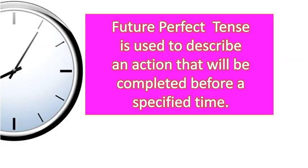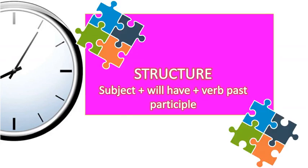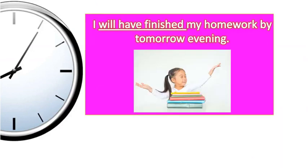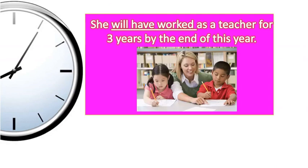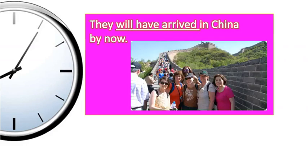Future perfect. This tense is used to describe an action that will be completed before a specified time. The structure is subject plus will have plus a verb past participle. For example: I will have finished my homework by tomorrow evening. She will have worked as a teacher for three years by the end of this year. They will have arrived in China by now.